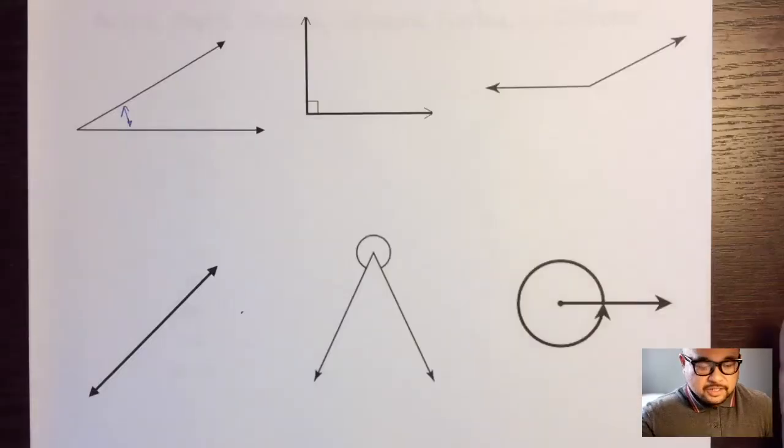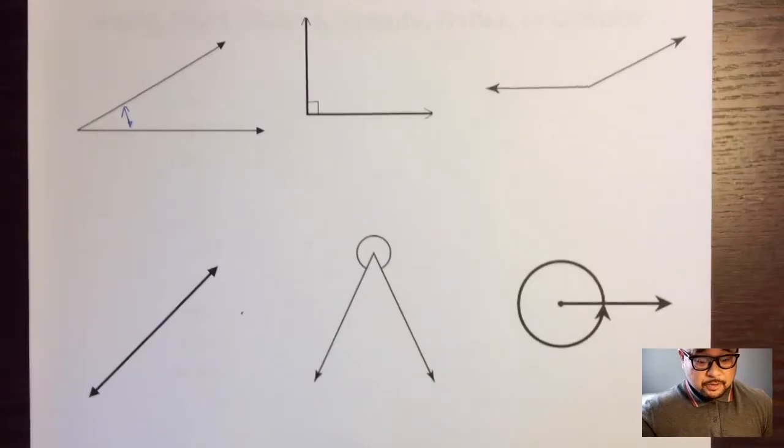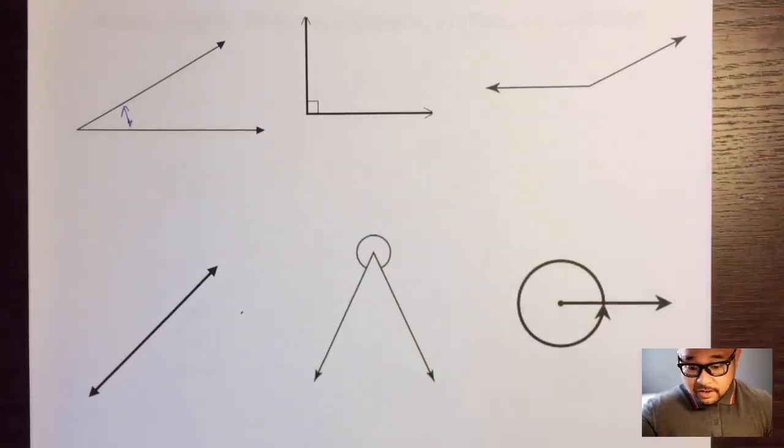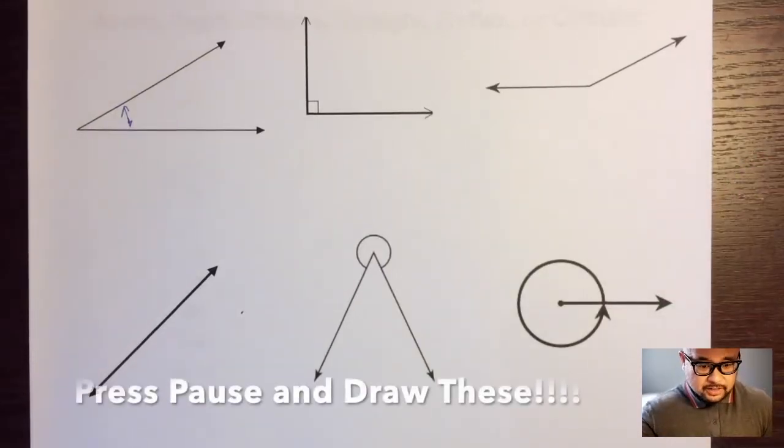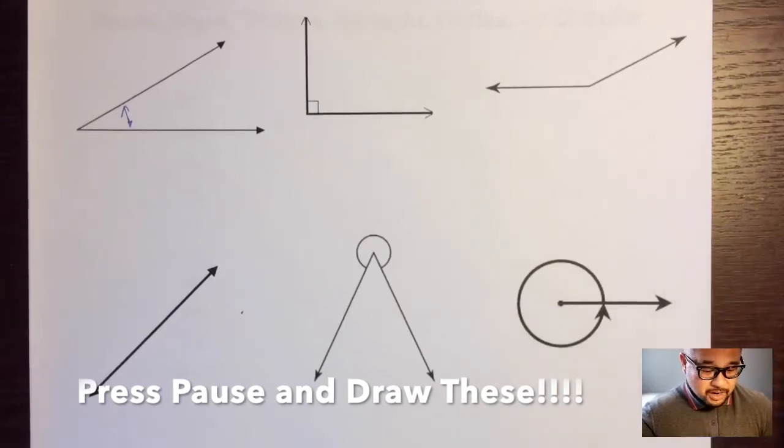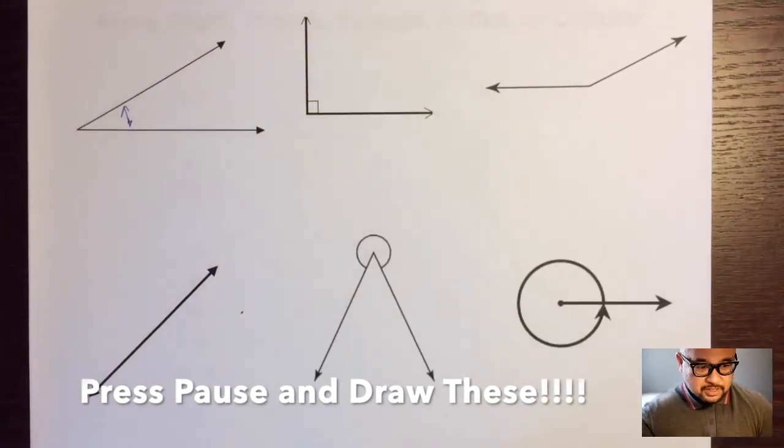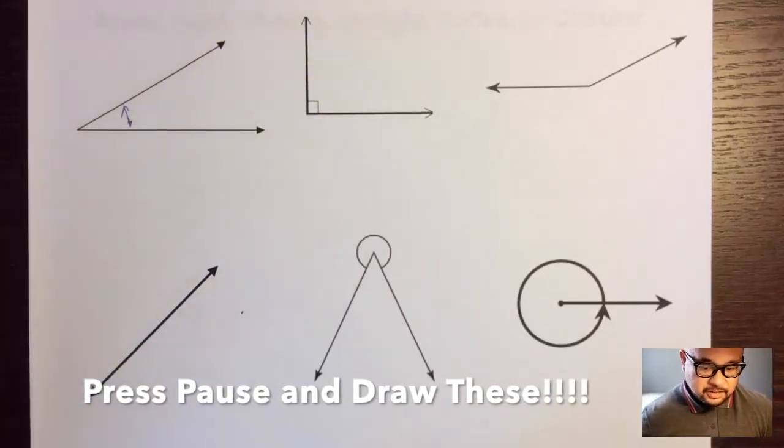And I'm going to show you and teach you about the six different types of angles based on their measurements. So here are examples of the six different types of angles in geometry. You notice some of them are a little wider than others and some of them aren't so wide. So I suggest pressing pause and drawing these in your notebooks.